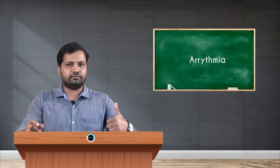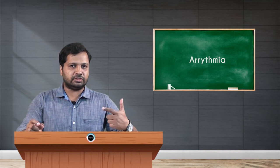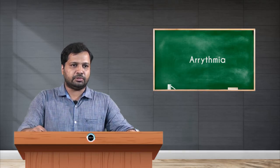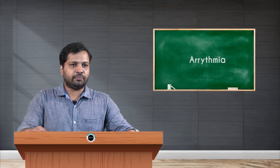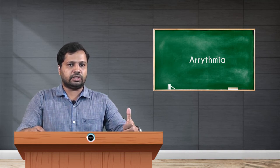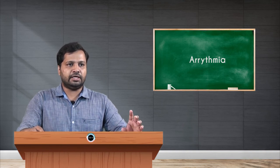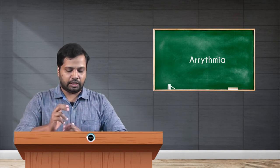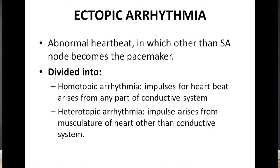The third classification of normotypic arrhythmia is sinus bradycardia. There will be a reduction in the discharge of impulses from the SA node, resulting in a decrease in heart rate. In the ECG, the distance between two R waves is prolonged — a prolonged RR interval is seen in sinus bradycardia. These are the three major classifications of normotypic arrhythmia.